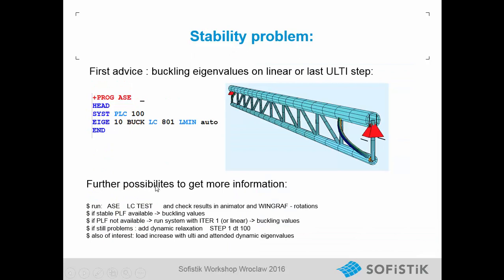What further possibilities do we have? There is a nice check in the ASE load case test where a little dynamic stiffness is added for the analysis, and you can check the results in the animator. If you have a primary load case available, you can make buckling eigenvalues. You could also use a load step of the geometric load increase, or run the TH3 analysis with system ETA1 — just one step — and then make buckling eigenvalues.